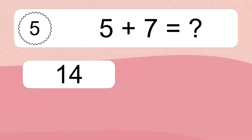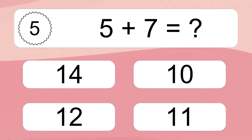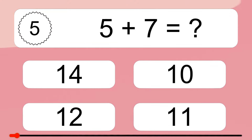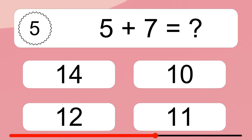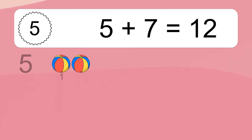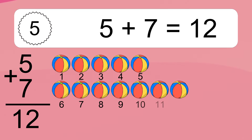5 plus 7 equals what? 5 plus 7 equals 12.